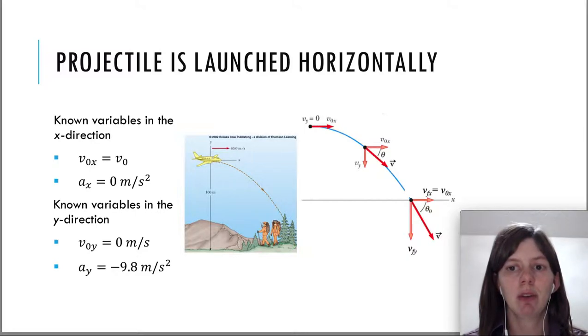So the first case of this is when your projectile is launched horizontally. In this case, after the initial horizontal motion, it will follow a parabolic path, which is really just half of the parabola.